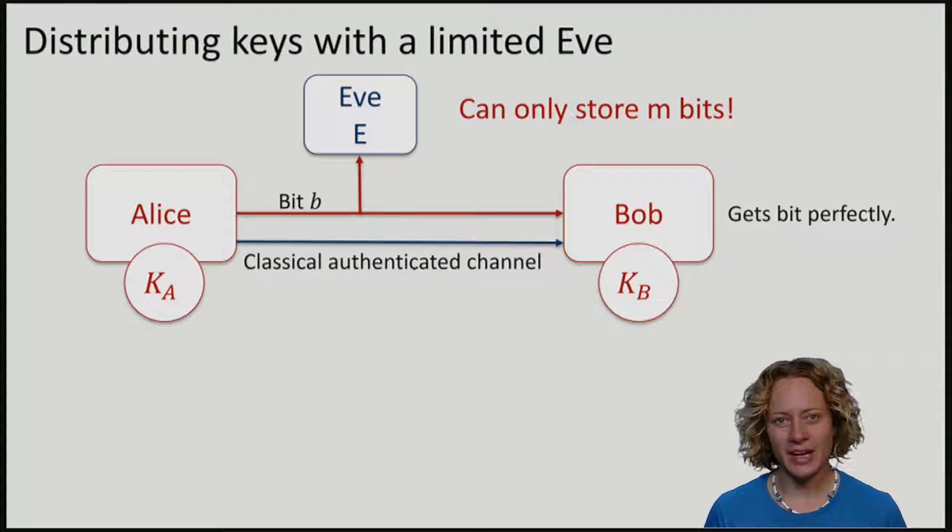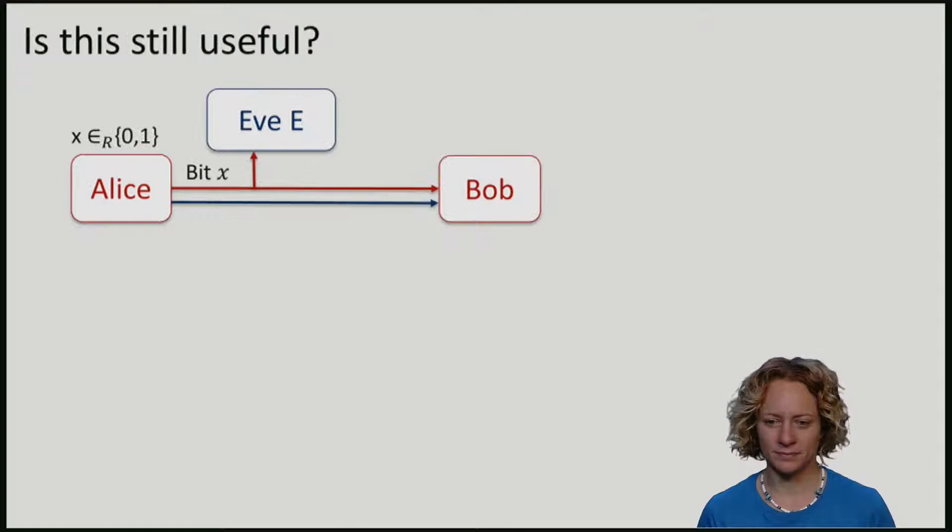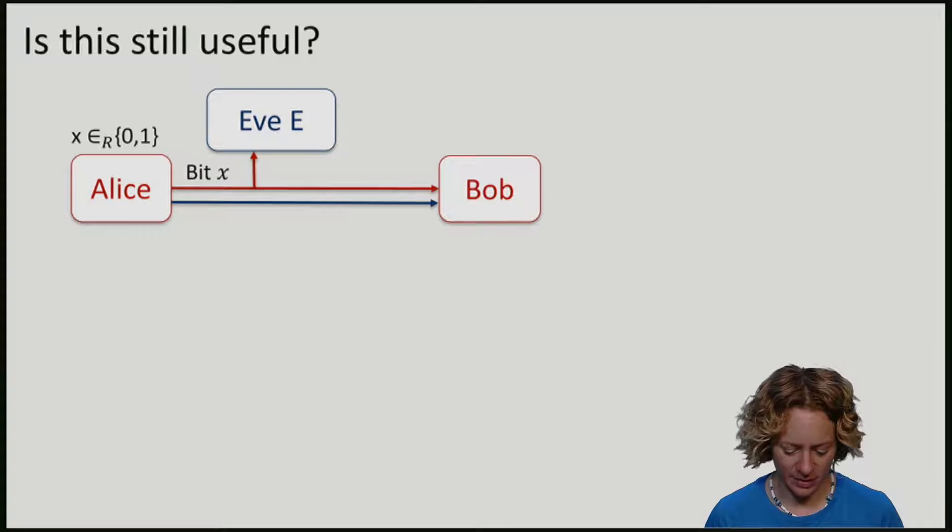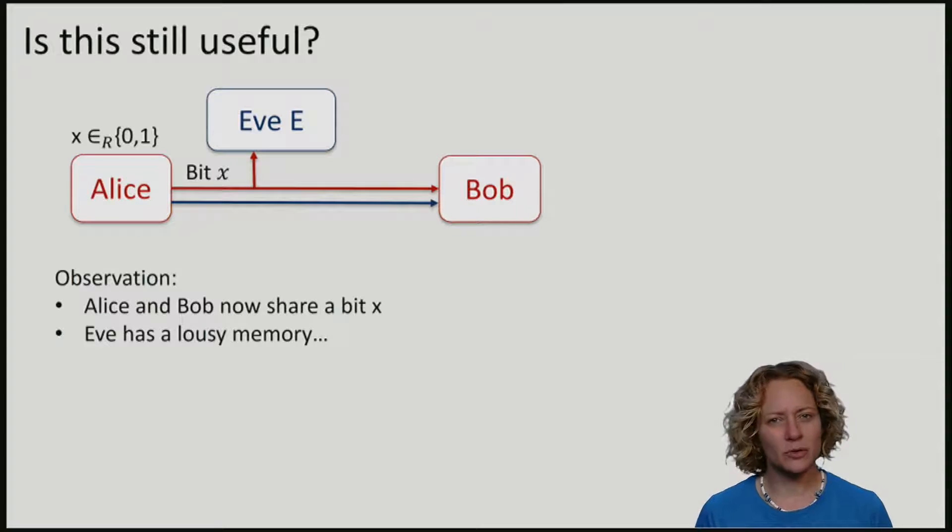Let's consider again what happens if we exchange only one bit. Alice chooses a random bit x and sends it over to Bob. So Bob has the same bit as Alice has. But now, of course, also Eve gets the bit perfectly.